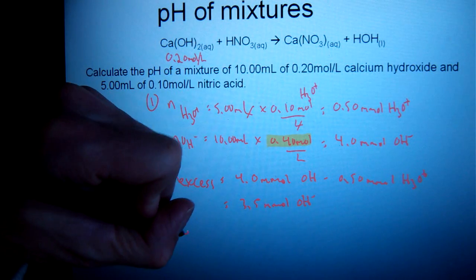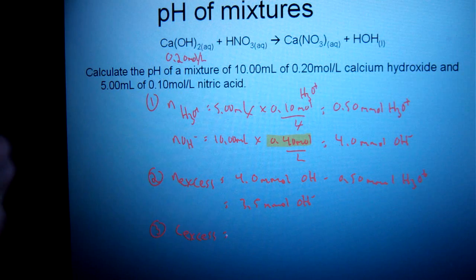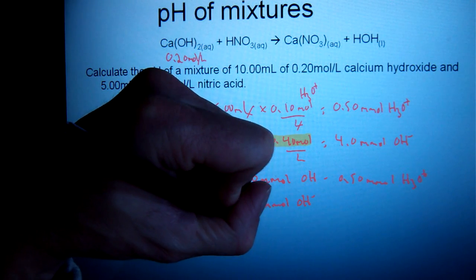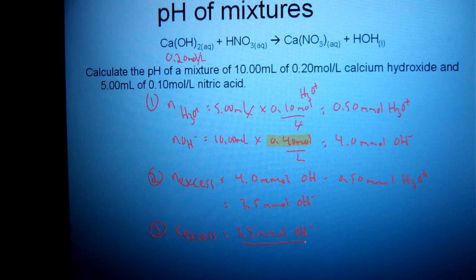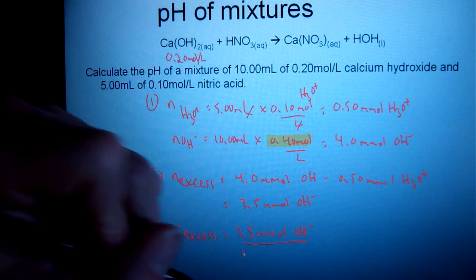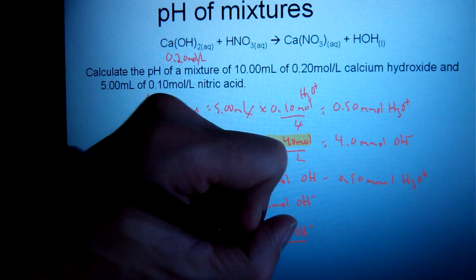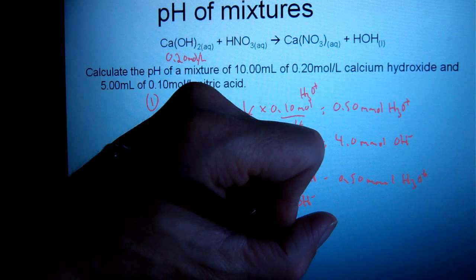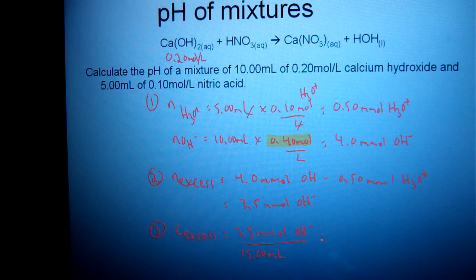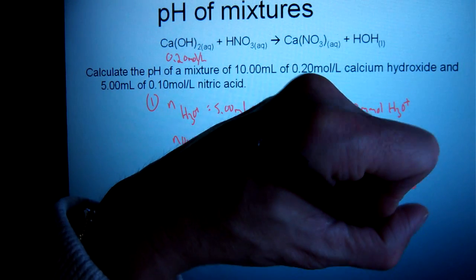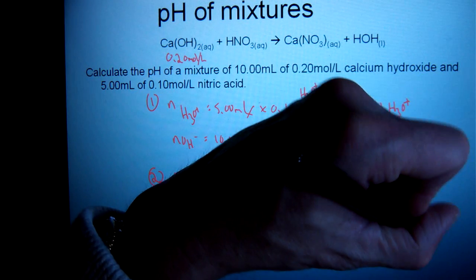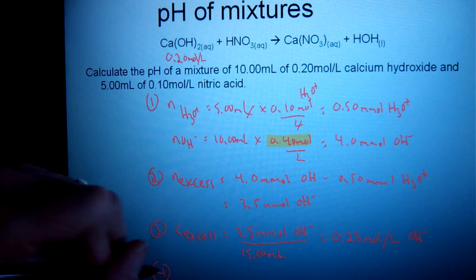Next step: I'm going to find the concentration of my excess. Concentration is in moles per liter, so I have 3.5 millimoles of hydroxide left over. I divide that by my total volume — the entire solution — which is 15.00 milliliters. That equals 0.23 moles per liter of hydroxide. Again, make sure you identify that as OH⁻.